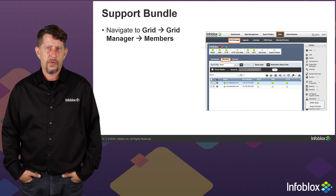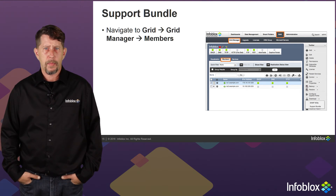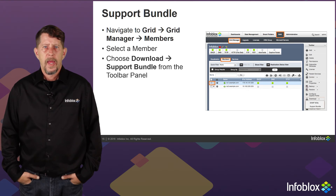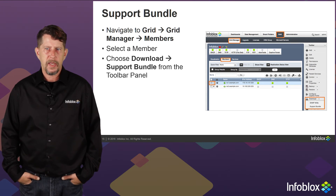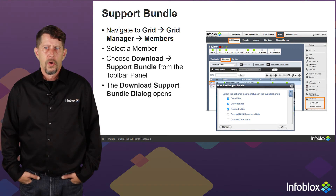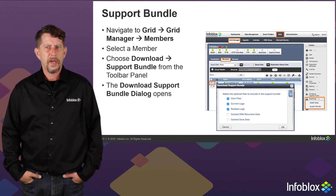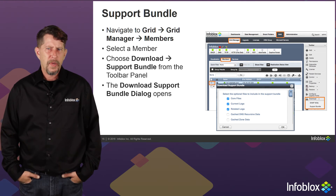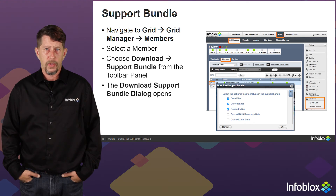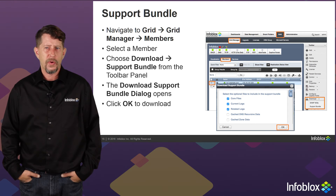Next, we'll look at generating a support bundle. Navigate to Grid, Grid Manager, Members. Select your member and choose Download, then Support Bundle. One quick note — this is also where you would download the SNMP MIBs for Infoblox. When we click on Support Bundle, the Download Support Bundle dialog opens, and we have a number of files that are additional to the default support bundle. Core files is checked by default — be aware that core files can be incredibly large and may slow down the support bundle download, so you may want to take your initial support bundle without core files. Support will ask you for core files if needed. Once you've selected the files you want, click OK to download.